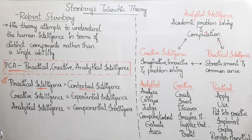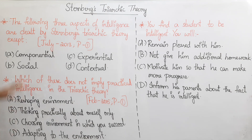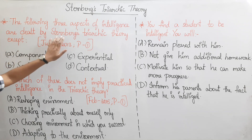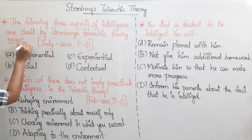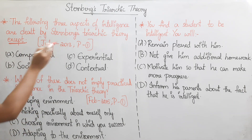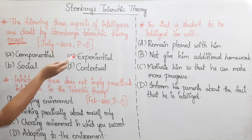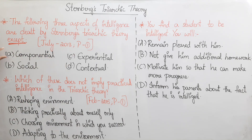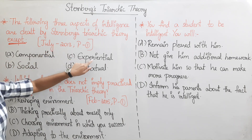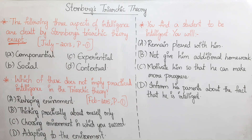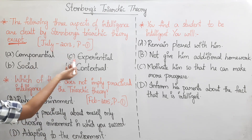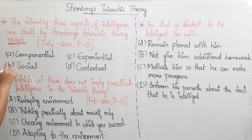The following three aspects of intelligence are dealt with in Sternberg's Triarchic Theory. This is a question from July 2018, Paper 1: which of the following is NOT part of Sternberg's Triarchic Theory? Option A: Componential. Option B: Social. Option C: Experiential. Option D: Contextual. Since the theory has Practical (Contextual), Creative (Experiential), and Analytical (Componential), the answer is Option B — Social.